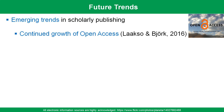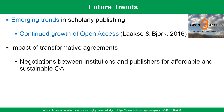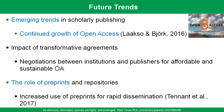The future of scholarly publishing is dynamic, with continued growth in open access anticipated. Studies suggest an upward trend in open access adoption across disciplines. Transformative agreements between institutions and publishers are likely to play a crucial role in shaping the landscape, ensuring sustainable and affordable access to research. The role of preprints and repositories is gaining prominence. Preprints enable researchers to share early versions of their work rapidly, contributing to open and collaborative science. Institutional and subject repositories further enhance accessibility and visibility.